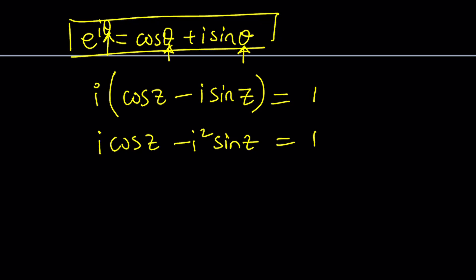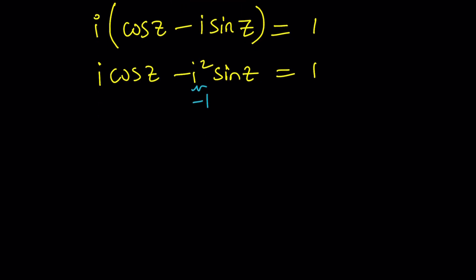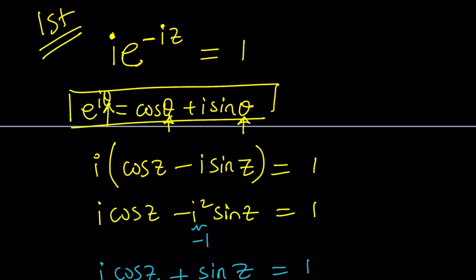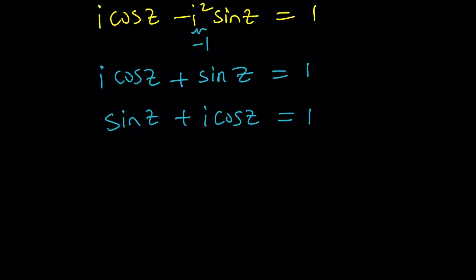Okay, make no mistake. Now, i² is negative 1. Hopefully you know that. That's the most important part of complex numbers. And this becomes i cos(z) plus sin(z) equals 1. Or I can write it as sin(z) plus i cos(z) equals 1. This is the identity I was talking about. So, anytime you see something like i times e to the negative iz, you can think of sin(z) plus i cos(z).